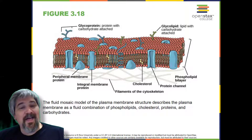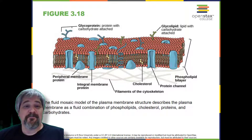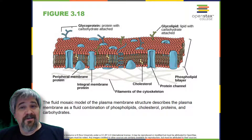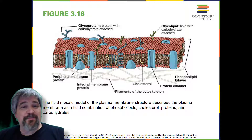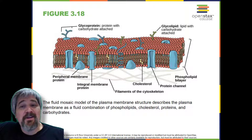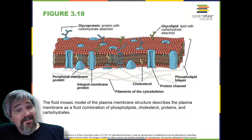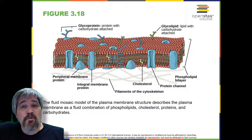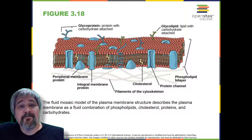Cholesterol acts as antifreeze in the cell membrane and is more abundant in animals that live in cold climates. The main fabric of the membrane is composed of two layers of phospholipid molecules, and the polar ends of these molecules — which look like a collection of balls in an artist's rendition of the model — are in contact with aqueous fluid both inside and outside the cell. Thus, both surfaces of the plasma membrane are hydrophilic. In contrast, the interior of the membrane between its two surfaces is a hydrophobic or nonpolar region because of the fatty acid tails. This region has no attraction for water or other polar molecules.